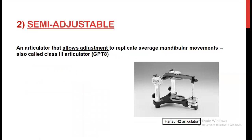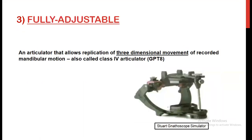The second type is the semi-adjustable articulator. It is an articulator that allows adjustment to replicate average mandibular movements, and these are also known as class 3 articulators. An example of a semi-adjustable articulator is the Hanau H2 articulator. The third type is the fully adjustable articulator, which can replicate all three-dimensional movements of the recorded mandibular motion. This type is also called a class 4 articulator, and an example is the Stuart Gnathoscope Simulator.